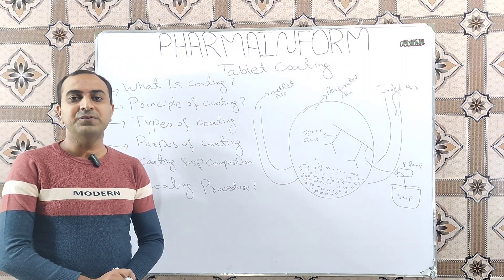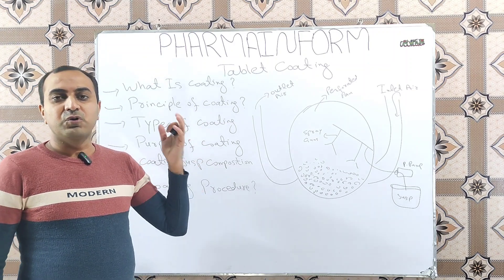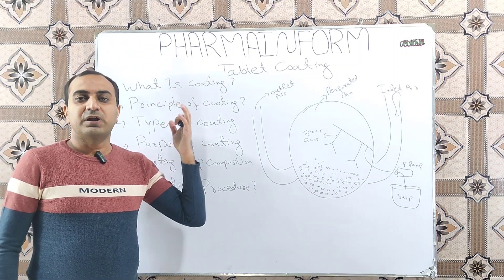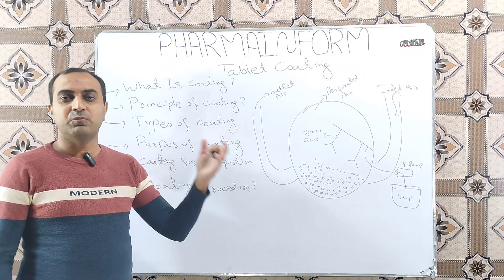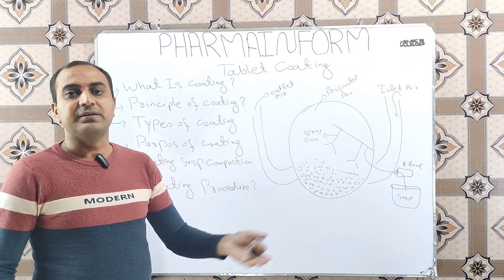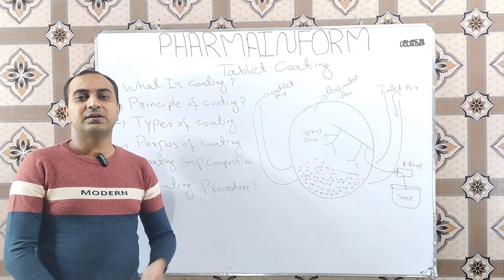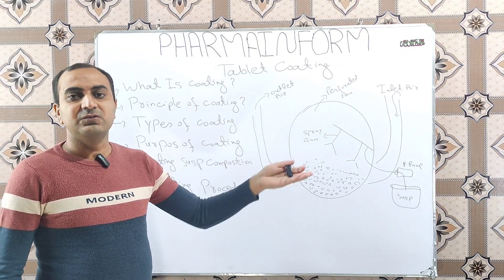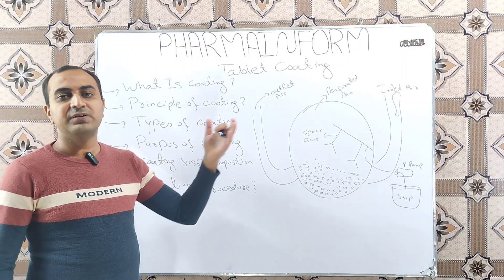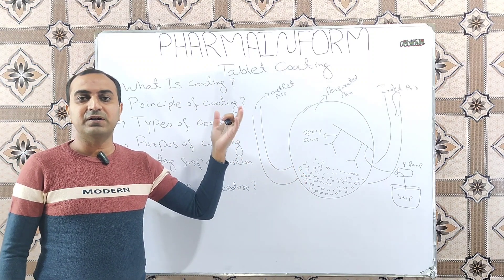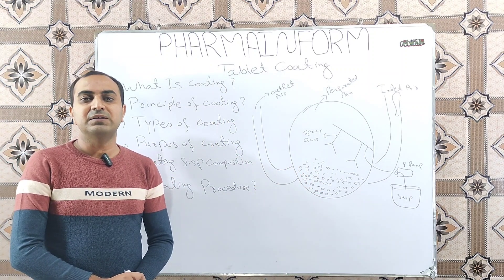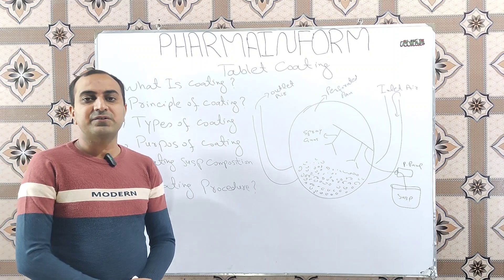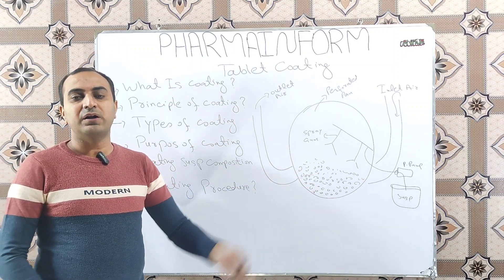We coat tablets to protect them from environmental effects such as temperature, humidity, or light. We also coat tablets to prevent mix-up — if we have different strengths of the same API, we coat different strengths with different colored coating suspensions to create differentiation between those strengths and prevent mix-up.